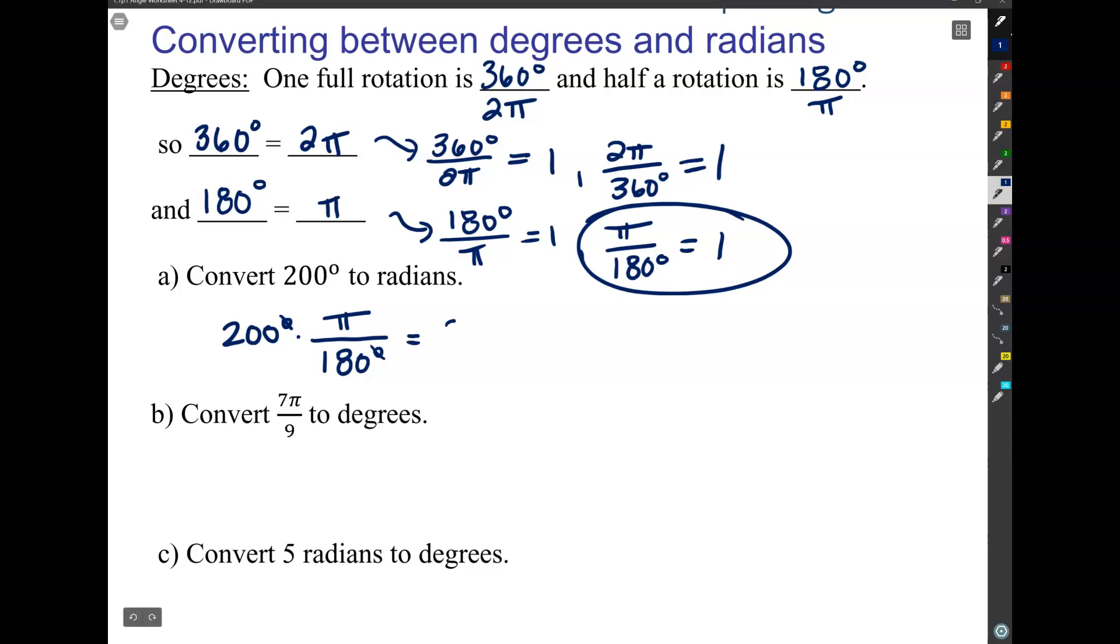And you can cancel out the degrees. And you're basically going to get 200π over 180. And if you get a nice exact number with a π in it, don't convert it to a decimal. Don't approximate it unless there's a word problem and you feel like you have a good reason that that would be an easier answer to work with.